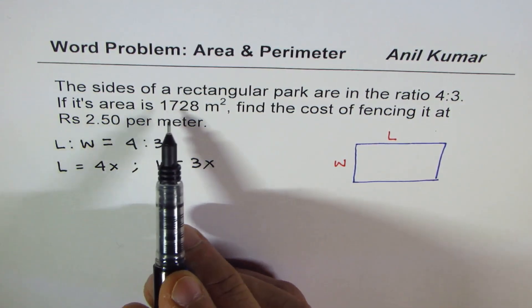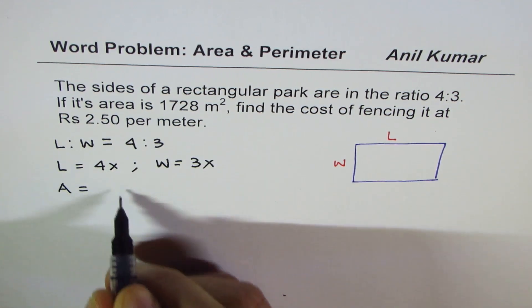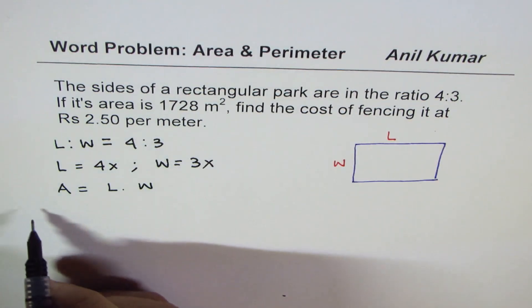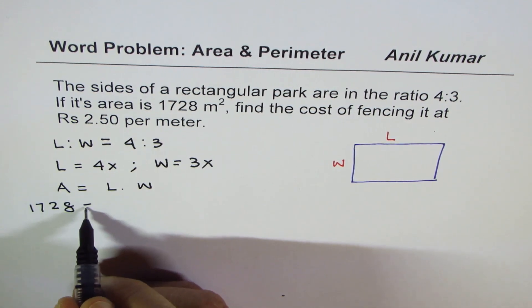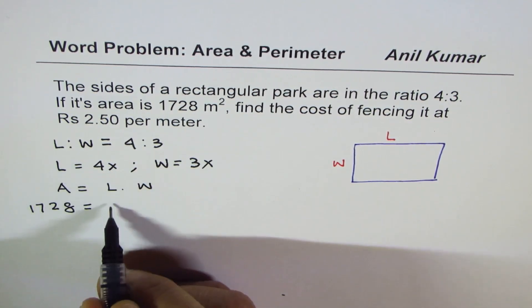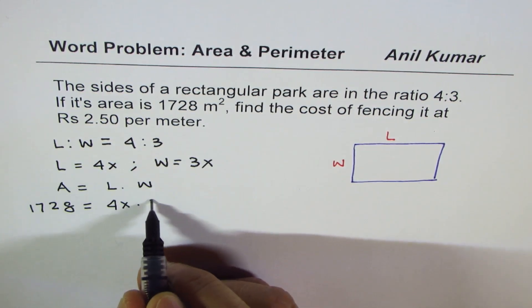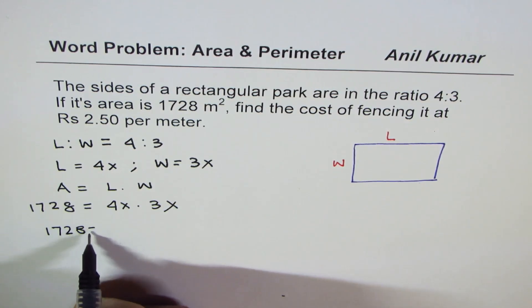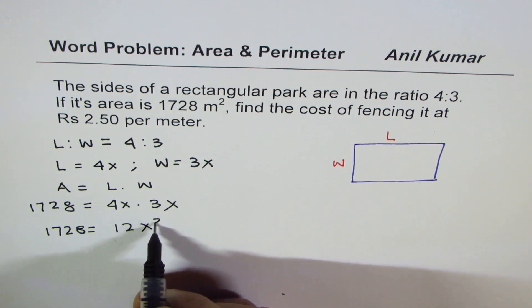If its area is 1728 meter square, that is to say, area is length times width. Area is given to us as 1728 is equal to length, which is 4x, times width, which is 3x. So we can say 1728 is equal to 12x squared.